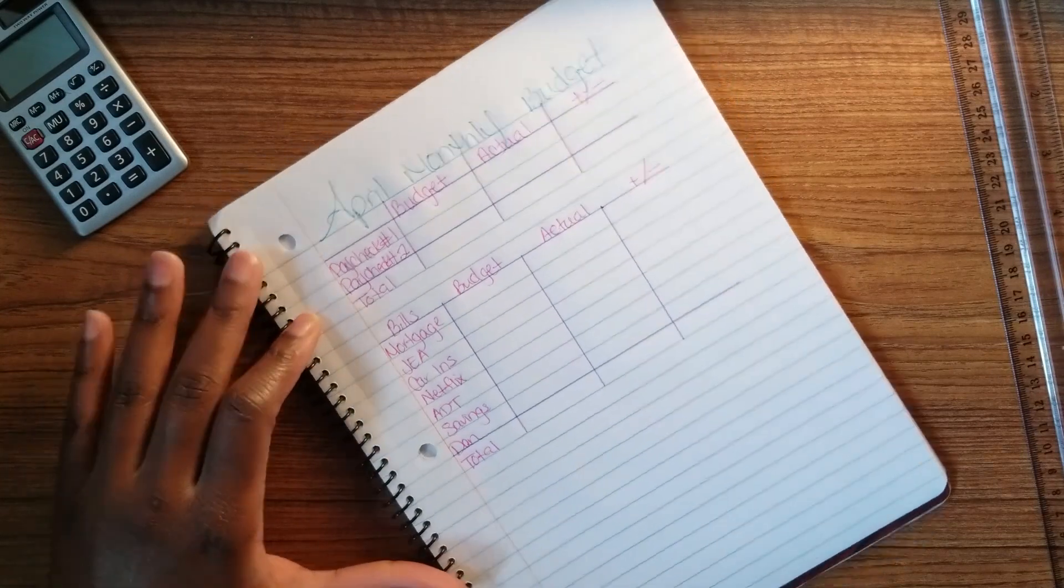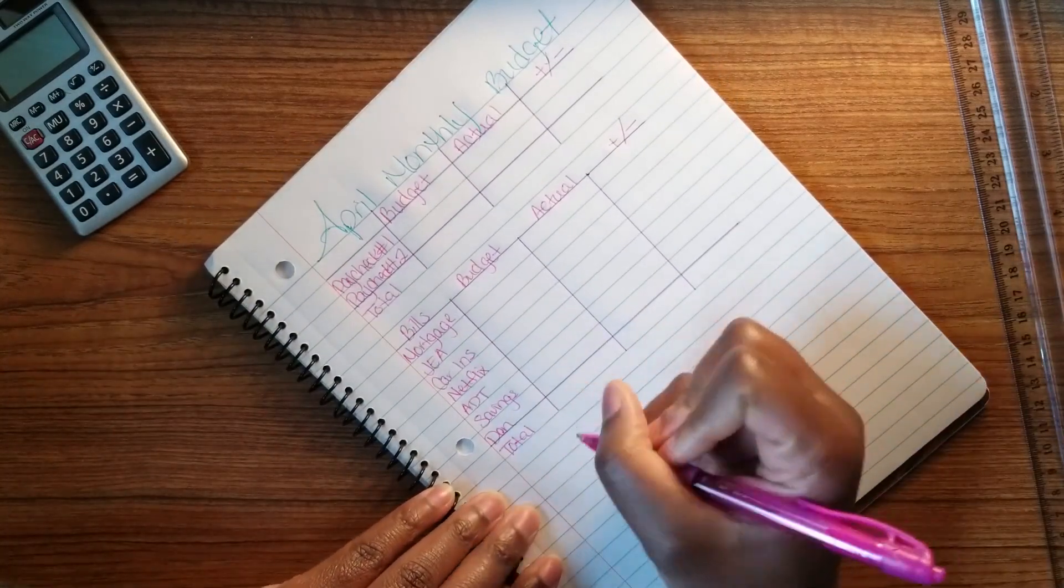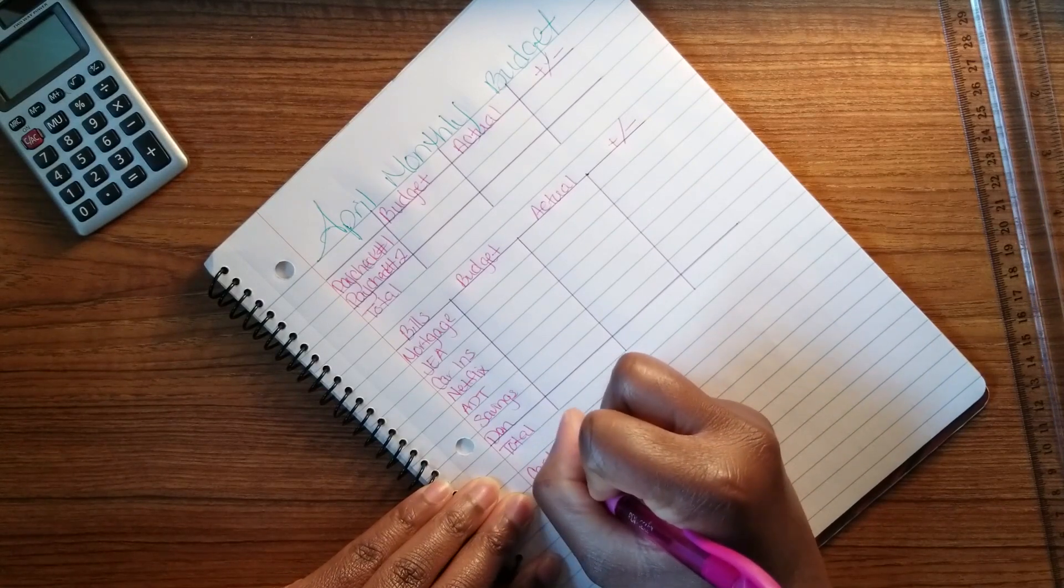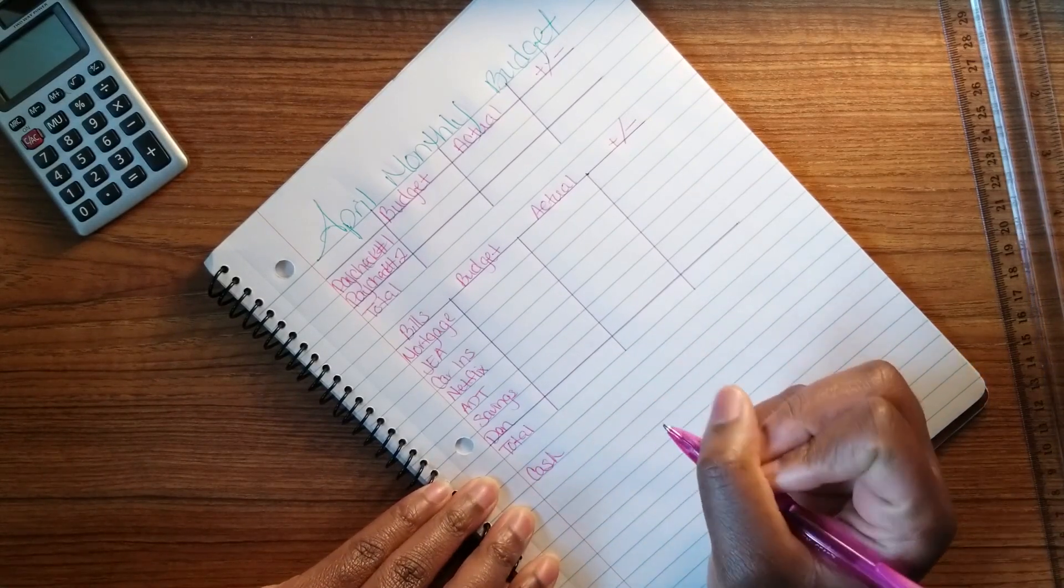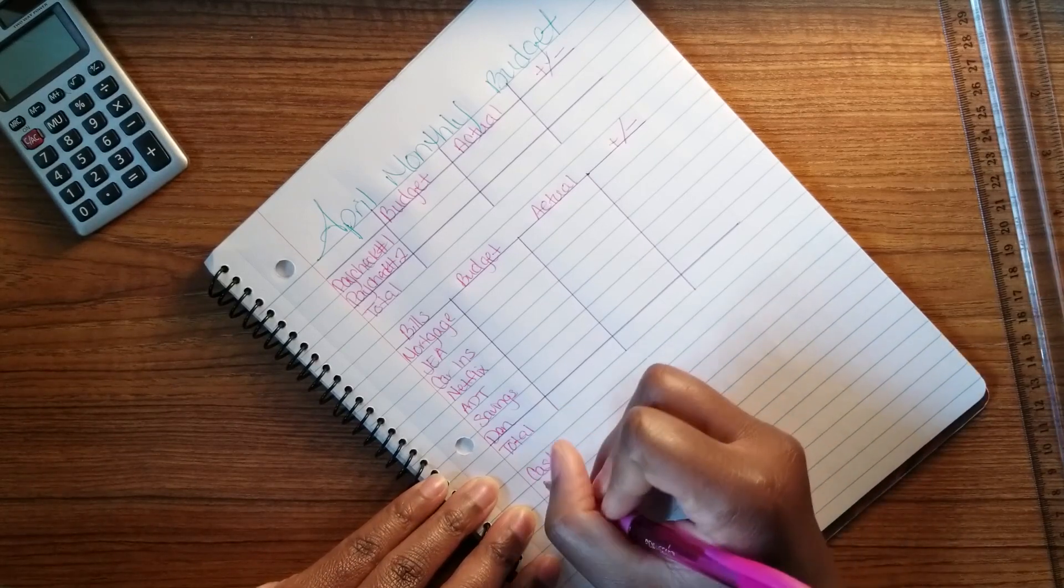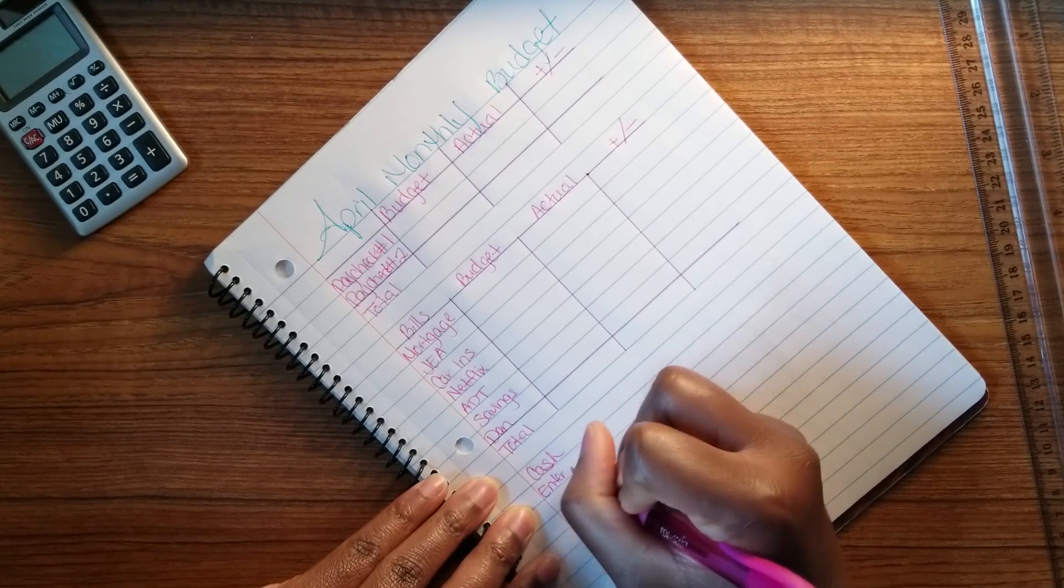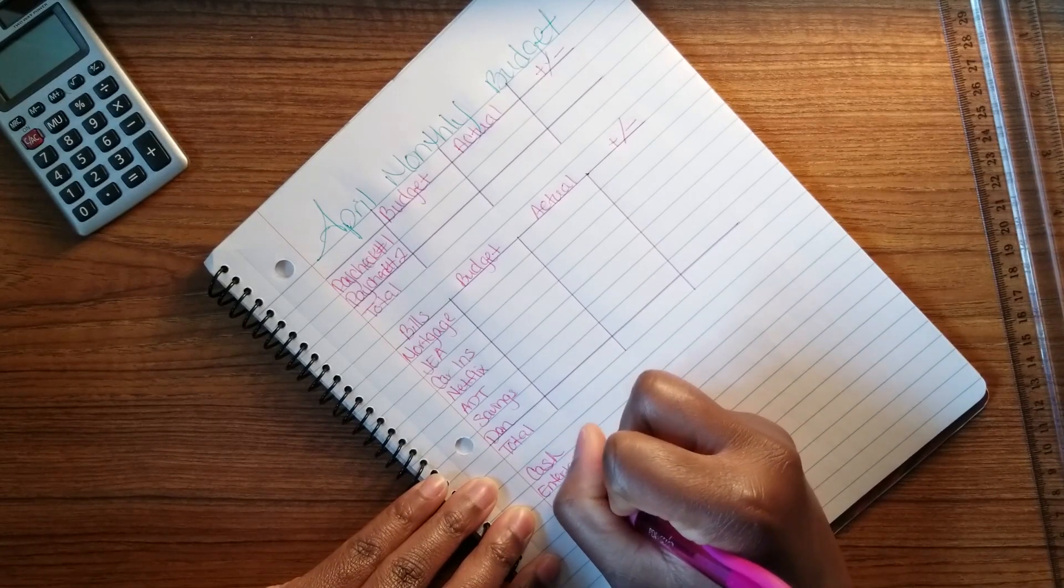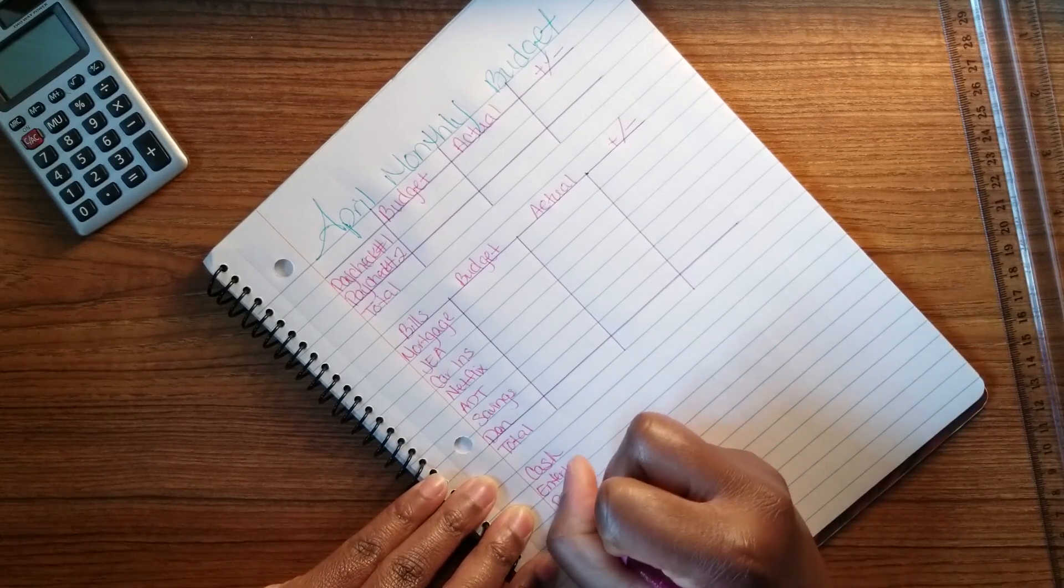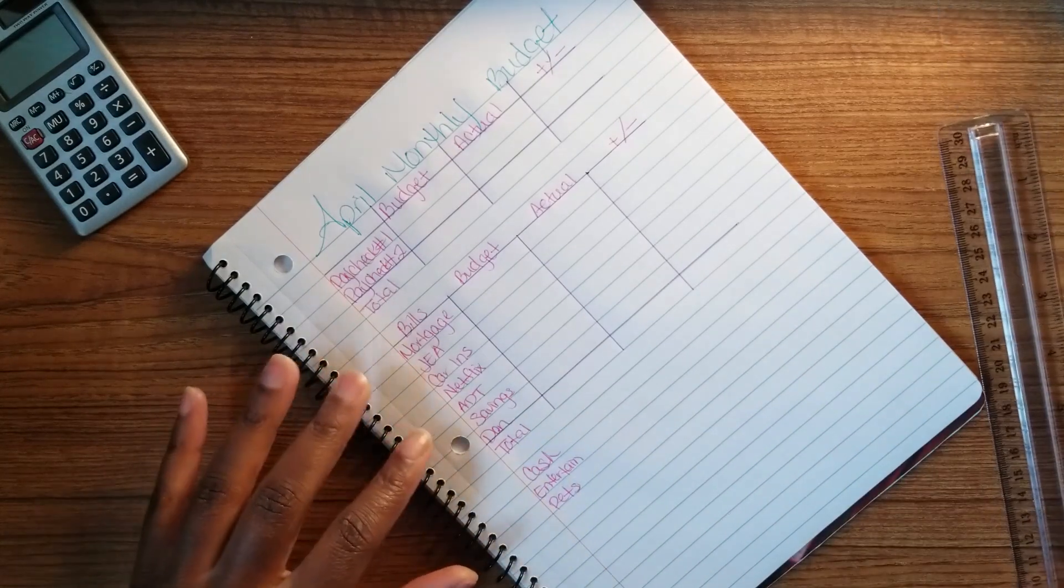I also have a cash section, cash envelope. I take out cash every month as well, more so for my allowance, but I normally call that my entertainment fund. I'm just gonna put entertain, and I have a pet category, and that's all I have for now.